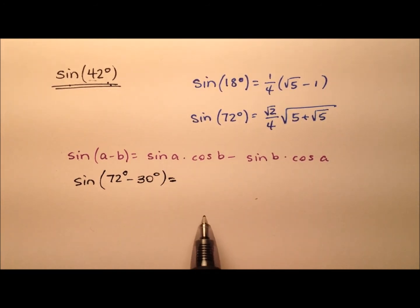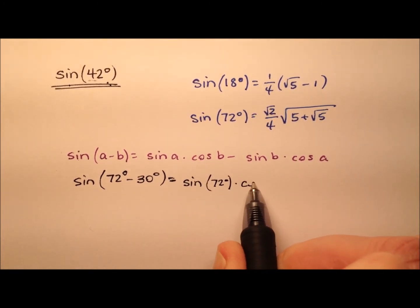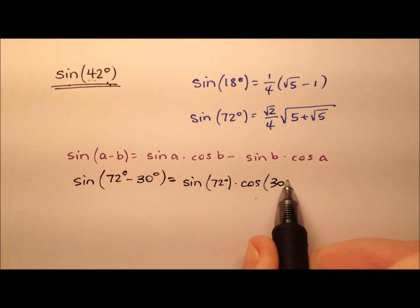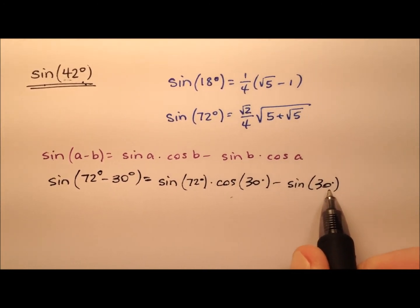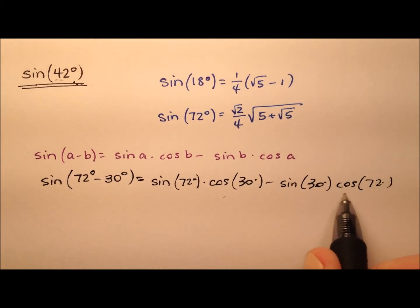So we can say it's going to be the sine of 72 degrees times the cosine of 30 degrees minus the sine of 30 degrees times the cosine of 72 degrees.